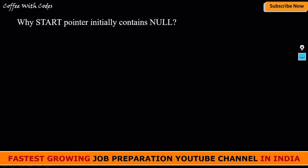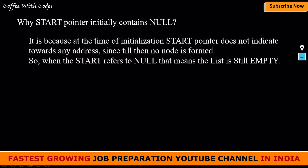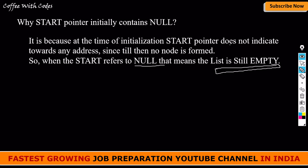Here is a very important question: why does the start pointer initially contain null? The answer is: at the time of initialization, the start pointer does not point to any address since no node has been formed yet. When start refers to null, that means the list is empty. This is an important concept — you can determine if a linked list is empty by checking if the start pointer is null. If it is null, the list is empty; otherwise it is not.